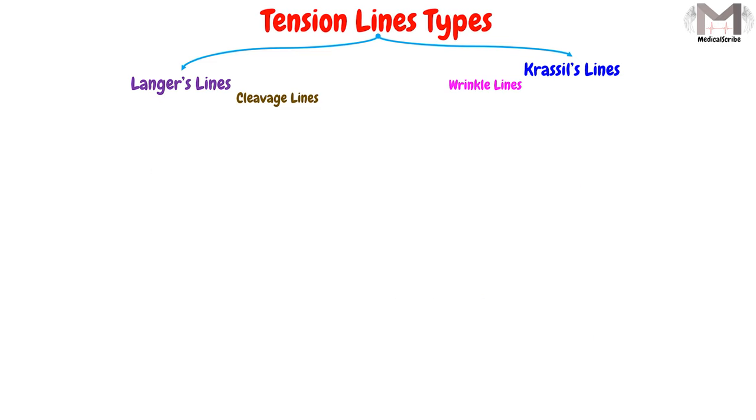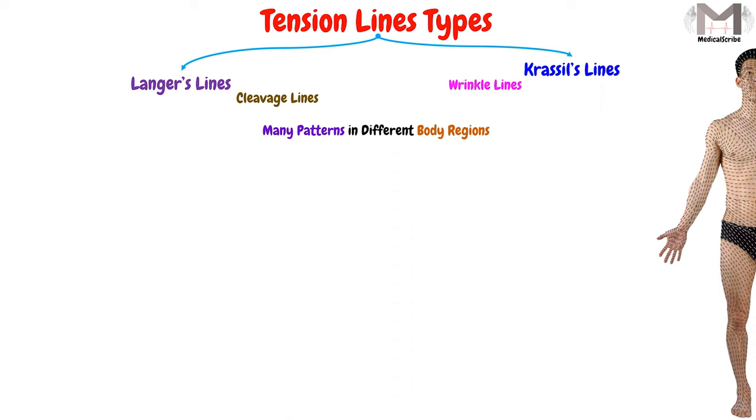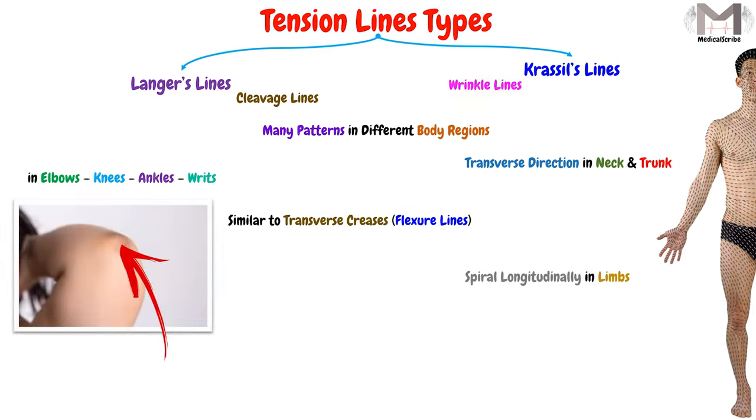Now, we have to know that these lines will make many patterns and many directions in different body regions. They tend to spiral longitudinally in the limbs. While in the neck and the trunk, they will run in a transverse direction. And in the elbows, knees, ankles, and wrists, they will move in a direction similar to that of the transverse creases, or similar to the flexure lines of the joints. These transverse creases, or these flexure lines, will be seen when we bend the joint.